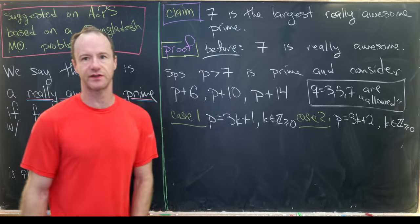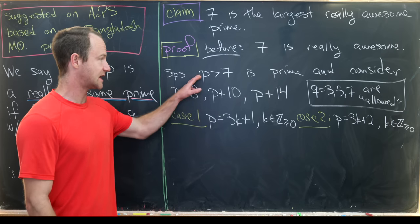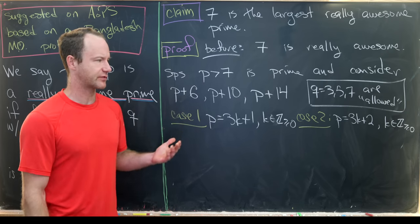You might say, what if p is equal to 3 times k? But that's impossible because p is a prime. And if p was equal to 3 times k, then it would be a multiple of 3.